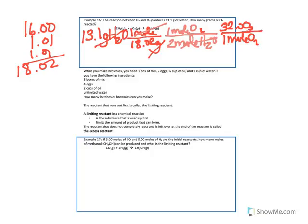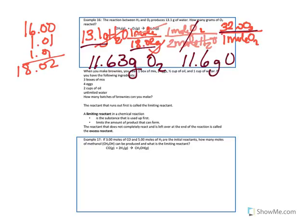This is why it's important to keep that subscript. If I had lost that subscript, I would have said 1 mole of O weighed 16 grams, which would have gotten me the wrong amount. Calculating: 13.1 divided by 18.02, divide by 2, then multiply by 32 gives us 11.63 grams of oxygen gas. With 3 significant figures in our answer, that rounds to 11.6 grams of oxygen gas.